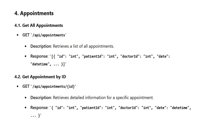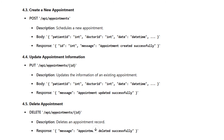The fourth part is appointments. GET API/appointments retrieves a list of all appointments, returning ID, patient ID, doctor ID, and date. Get appointment by ID retrieves detailed information for a specific appointment. Create a new appointment uses POST API/appointments with body fields patient ID, doctor ID, and date; the response includes the ID and a success message.